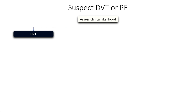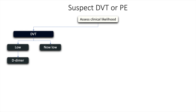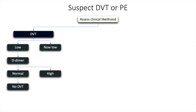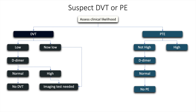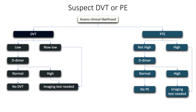An integrated diagnostic approach would be to assess the clinical likelihood of DVT and PTE. If the clinical likelihood of DVT is low, a D-dimer can be done; if normal, this rules out deep vein thrombosis. If it is elevated or the clinical likelihood of DVT is high, imaging tests would be required. Similarly, if the clinical likelihood of PTE is not high, a D-dimer may be done; a negative test would rule out PTE.